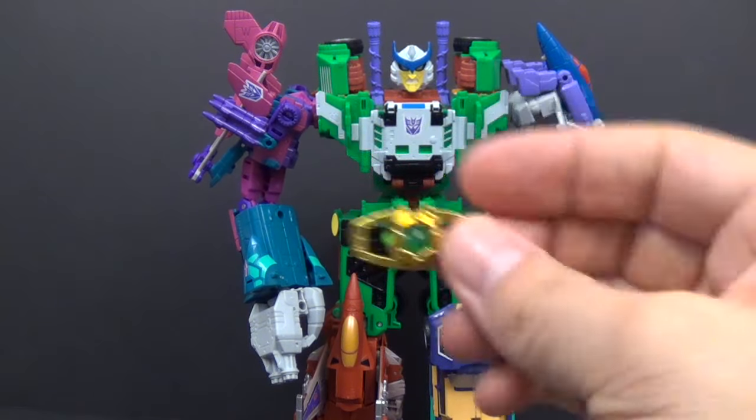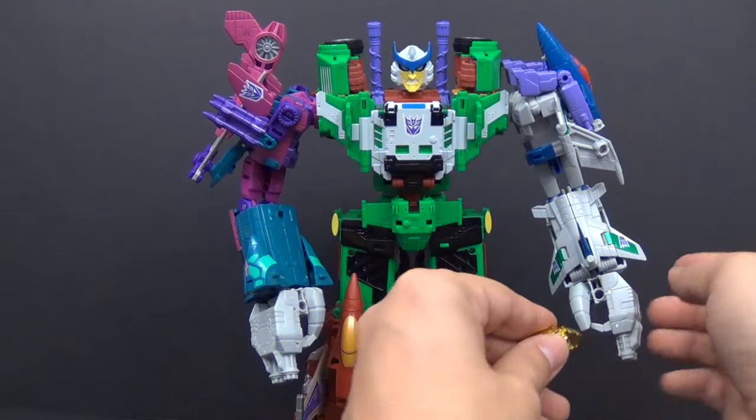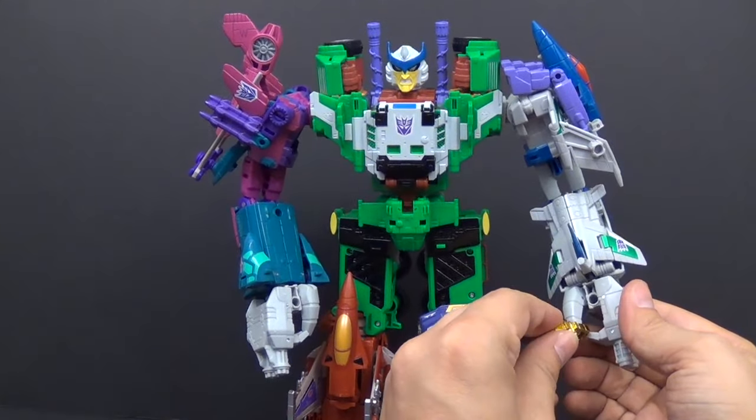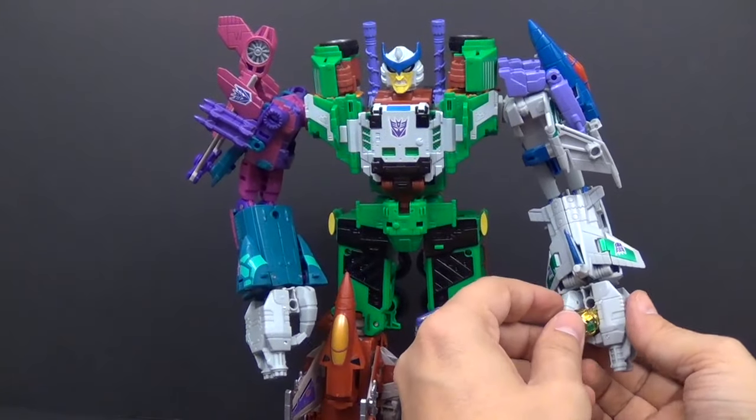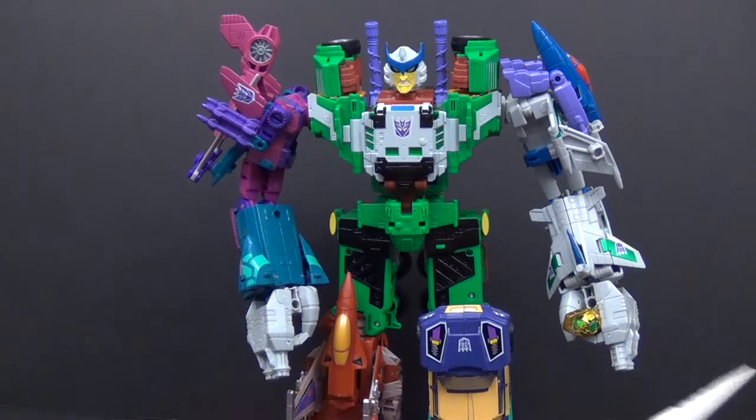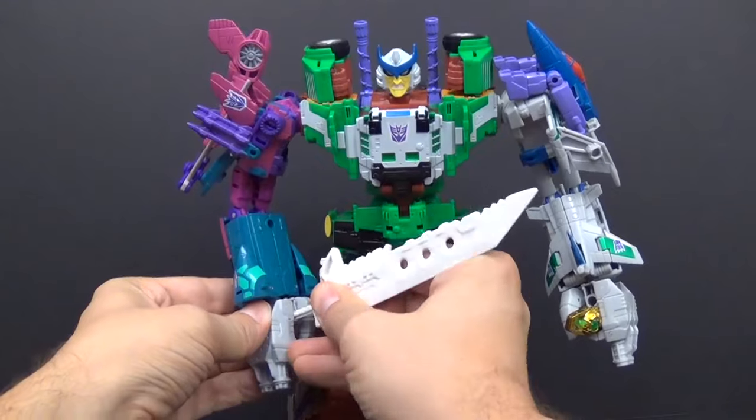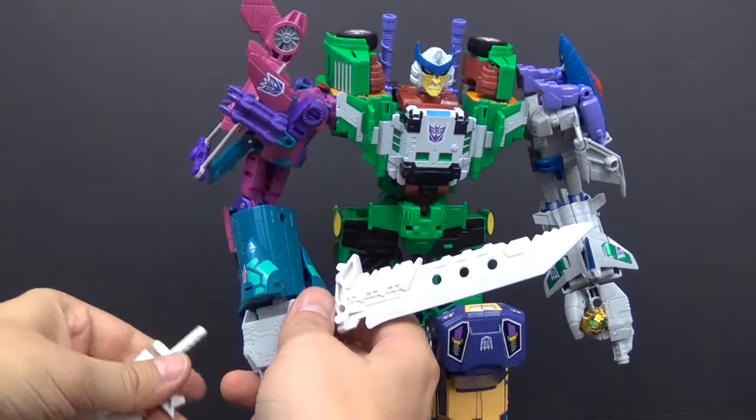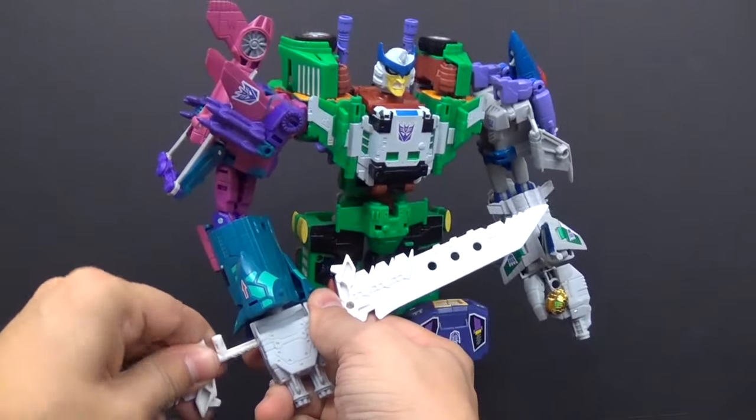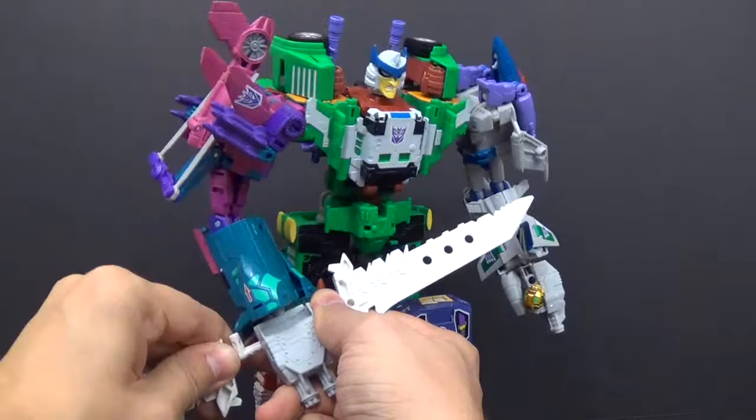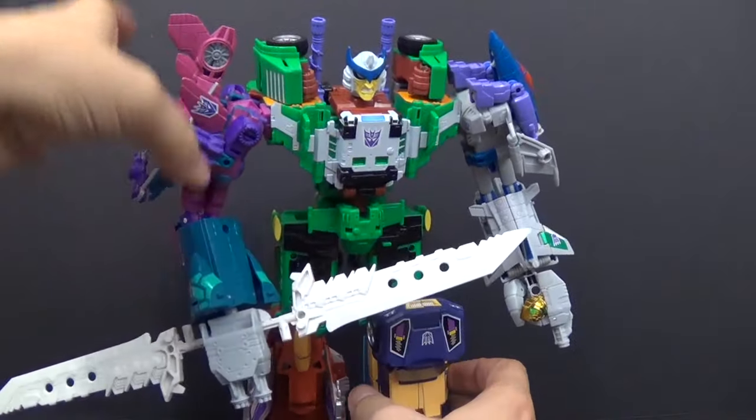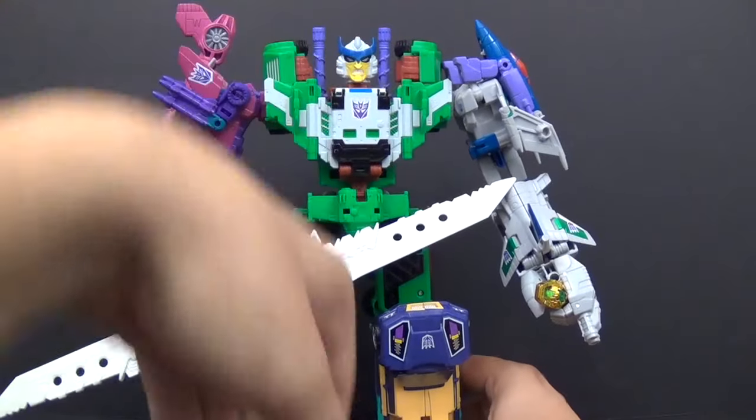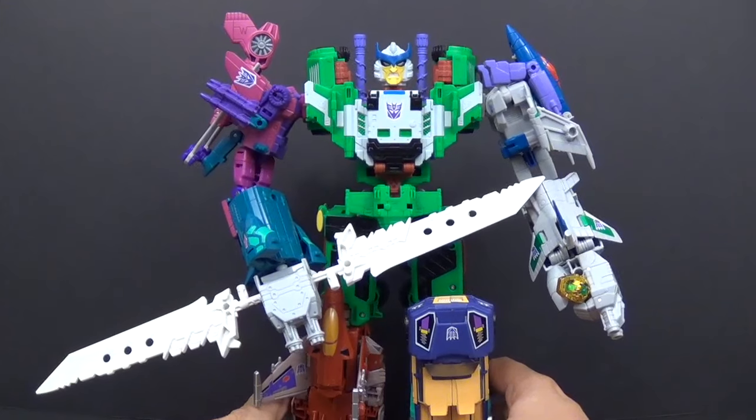We have the Matrix of Malice which you can hold. Basically, these thumbs will kind of go like this and you can get it in there a little bit. I mainly just have them hold it like that. Then you have your weapon here. You can put one half in there and then one half on the other side.